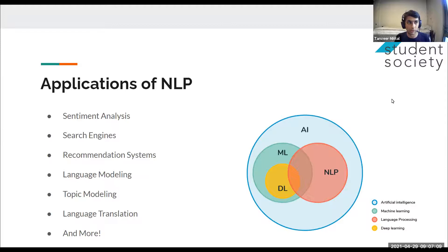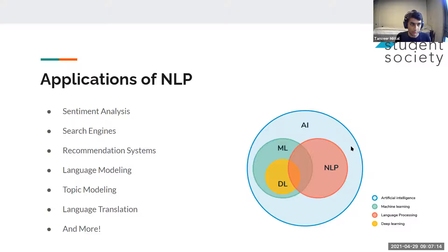One more thing to note about this slide is this diagram. You have artificial intelligence as a very broad field, and then machine learning is a subset within artificial intelligence. Then deep learning, which is about neural network models, is a subset of machine learning. Lots of NLP uses deep learning and machine learning, but not all of it does.